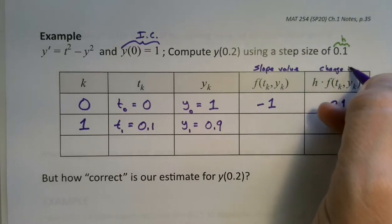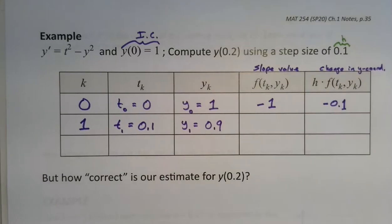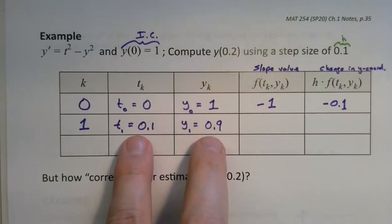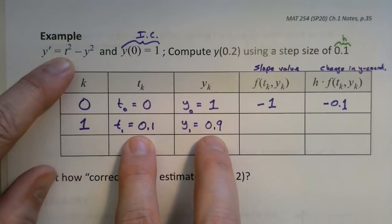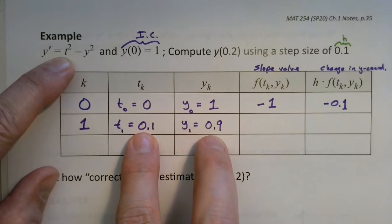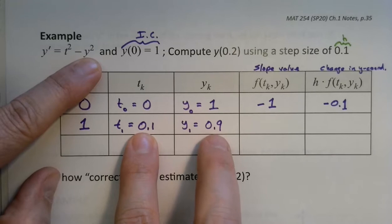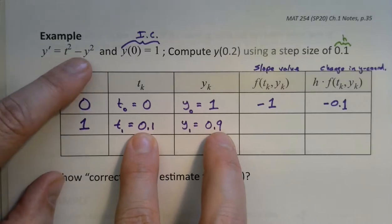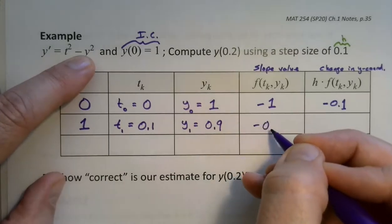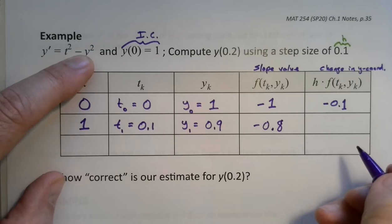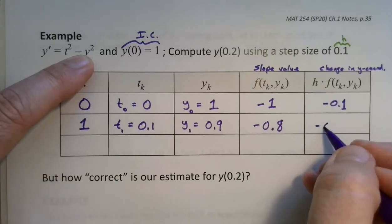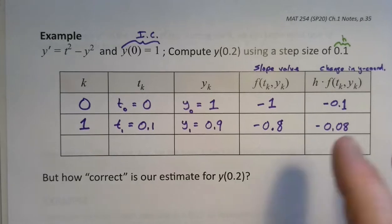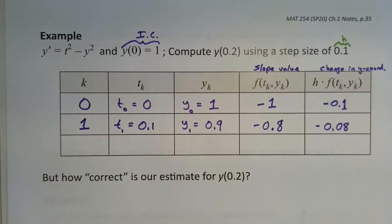That delta-y column tells me the change in the y coordinate. Now I need to figure out the slope at my new point. The equation says take t squared: 0.1 squared is 0.01, minus y squared: 0.9 squared is 0.81. So 0.01 minus 0.81 is negative 0.8. Multiplying by the step size gives negative 0.08.